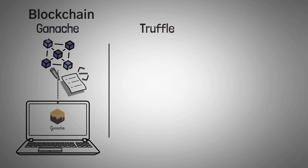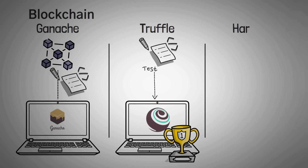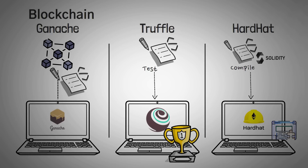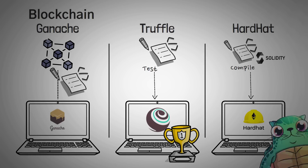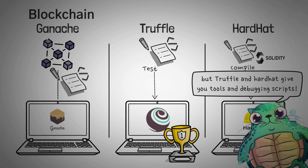Next up is Truffle. Truffle lets you test your smart contracts and claims world-class debugging. They also had the first mover advantage by being one of the first blockchain tools to hit the market. Finally, we have Hardhat. Hardhat is another blockchain tool that can help you compile your smart contracts and let you run and test your Solidity code locally. They're also known for having a ton of features and plugins. Many people who've tried both say they enjoy Hardhat better. To differentiate: Ganache lets you test on your own blockchain, while Truffle and Hardhat give you tools and debugging scripts.